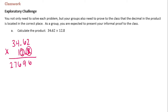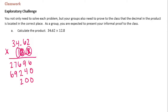Cross out the eight, on to the two. Put my placeholder down. Two times two is four. Two times six is twelve, carry the one. Two times four is eight, plus one is nine. Two times three is six. Done with the two, on to the one. This time I have two zeros. One times two is two, one times six is six, one times four is four, one times three is three.